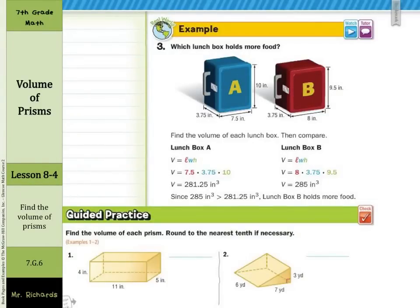And in our last guided example, we may be asked to find the volume of two objects and to compare the volume. So which lunchbox holds more food, A or B? Well, you can see where they found the volume of A by multiplying the length, the width, and the height to get 281.25 inches cubed. The volume of B to get 285 inches cubed. So since 285 is larger than 281, B holds more food, even though it may look a little shorter than A. The truth is the volume indicates that it holds more food.